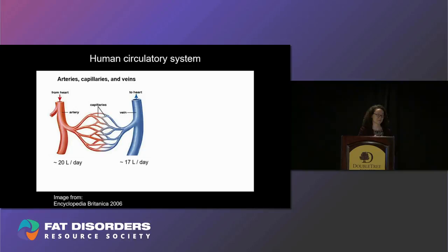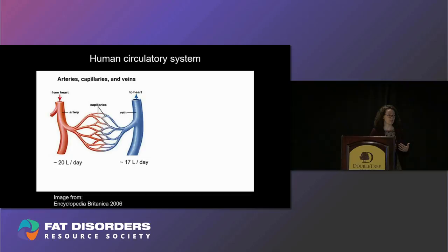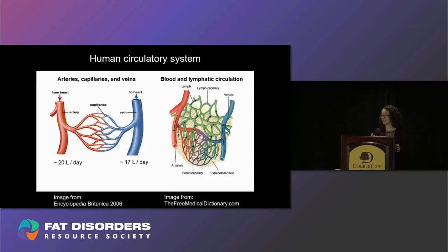Dr. Herbst gave a wonderful and thorough overview this morning of the body's circulatory system. This is an overview of the concept that arteries deliver blood to tissue and veins return blood back to the heart. There is a difference in how much fluid is returned in the venous system, and that difference is the uptake of lymphatic vessels whose function is primarily to return fluid and waste products from the extracellular space of your tissue.